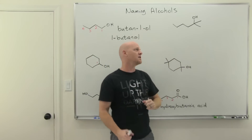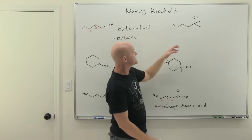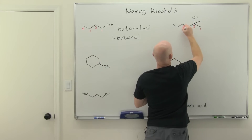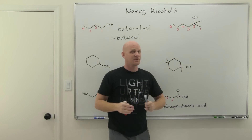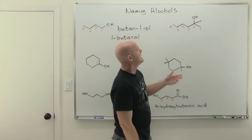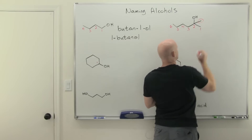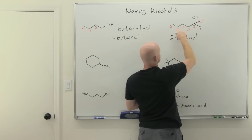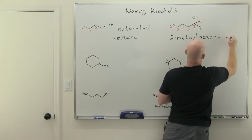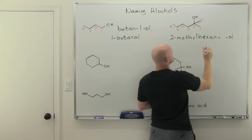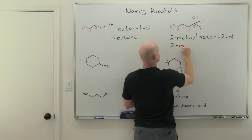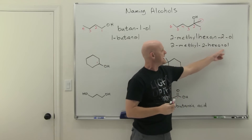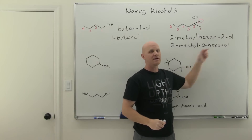Now let's add a substituent. In this example, the longest continuous carbon chain the OH is attached to is six carbons, numbered right to left to give the OH the lower number. Six carbons is hexane, and with the alcohol suffix we get hexanol. We also have a methyl substituent — substituents are named first. The methyl is at carbon two and the OH is at carbon two as well, giving us 2-methylhexan-2-ol. You can also write this as 2-methyl-2-hexanol, since the alcohol is the only functional group in the parent chain.